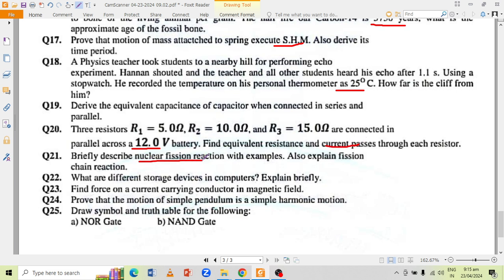Explain nuclear fission reaction with examples. Also explain fusion chain reaction. What are different storage devices in computers? Explain briefly. Find force on a current carrying conductor in magnetic field. Prove that motion of simple pendulum is a simple harmonic motion.